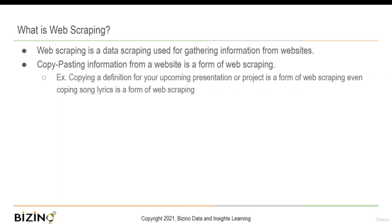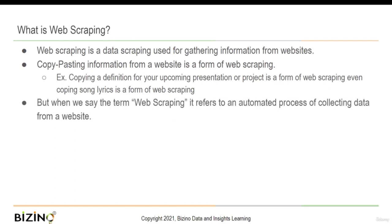Let's take an example. Consider you want to create a song dataset which contains song name, artist name, and lyrics of that song. One way to do it is copy-pasting one song at a time. Well, just think how much time and energy that will consume. This is where the web scraping bot comes into play — it can easily automate the process and significantly reduce the time for collecting data.